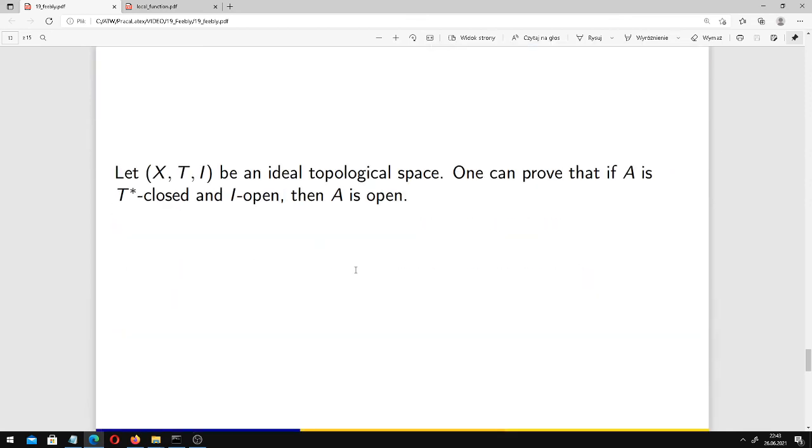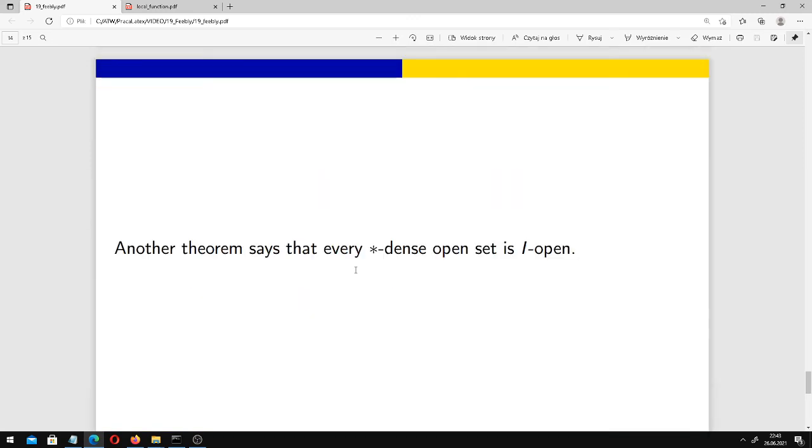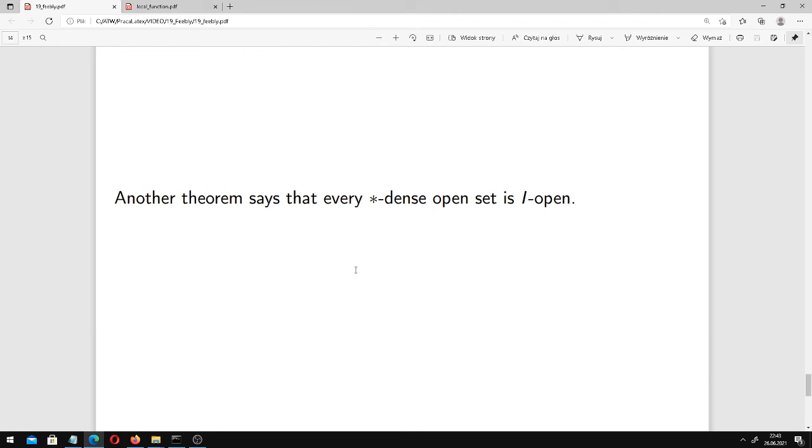If we have an ideal topological space, then one can prove that if A is T-star closed and I-open at the same time, then it is open. And the last thing in this video: another theorem says that every star dense open set is I-open. In the next video, we shall deal with feebly open and semi-open sets, just as I've already said.